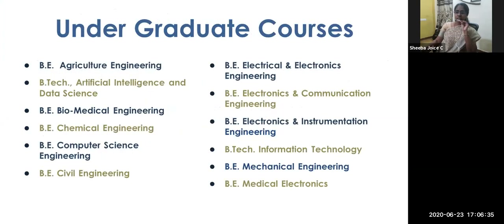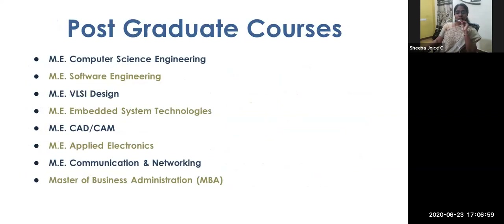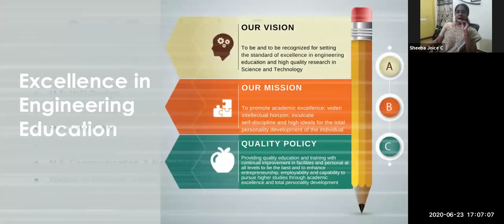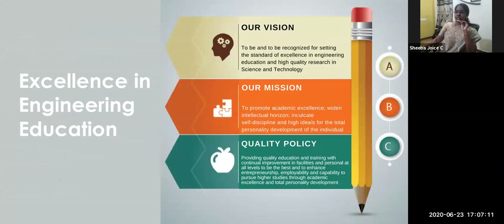The undergraduate courses we offer include BE in Agriculture Engineering, Artificial Intelligence and Data Science, Biomedical, Chemical, Computer Science, Civil Engineering, Electrical and Electronics, Electronics and Communication, Electronics and Instrumentation, Information Technology, Mechanical Engineering, and Medical Electronics. We also have postgraduate courses in engineering and an MBA program. Our vision is to be recognized for setting the standard of excellence in engineering education and high-quality research. Our mission is to promote academic excellence, widen intellectual horizons, and inculcate self-discipline for total personality development.